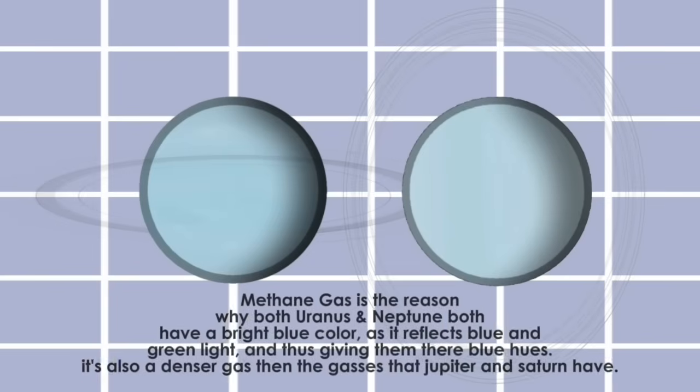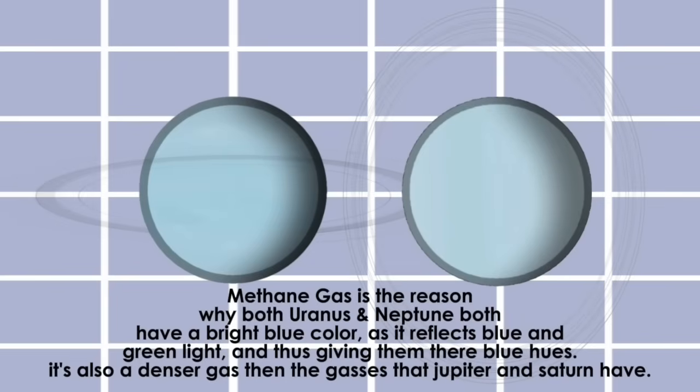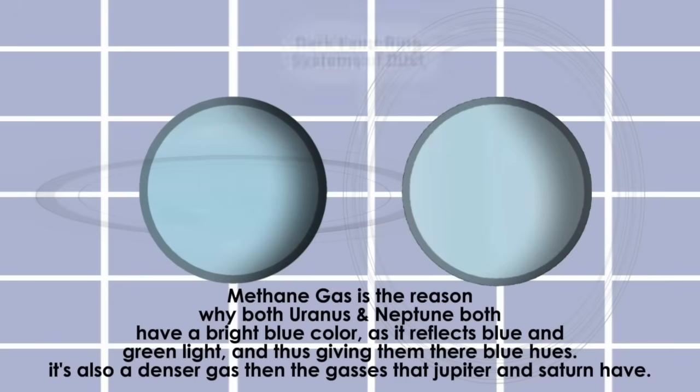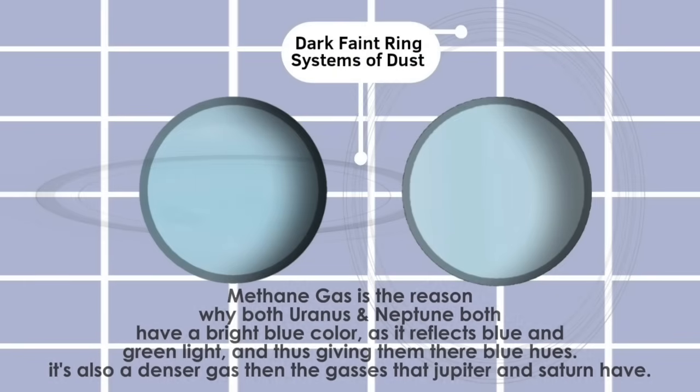Both of us contain colder and denser gases, including methane, which gives us a bright blue color. Besides the methane and ammonia in our atmospheres, we also have faint dark rings and a fair share of dozen moons. But this is pretty much where the similarities end.